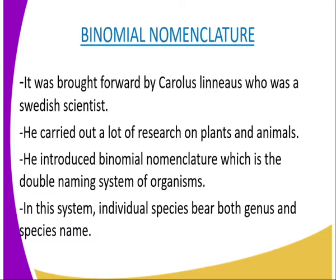The binomial nomenclature was put forward by Carolus Linnaeus, who was a Swedish scientist. He pioneered a universal system of classification which had names and concise descriptions of organisms. He introduced the binomial nomenclature, a system which involves giving two names to an organism. In this system, individual species bear both a generic name and a species name. Therefore, an organism has two names.